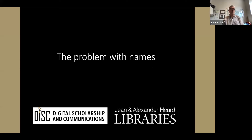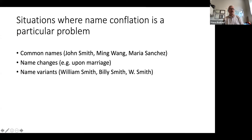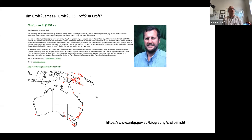First, the problem of disambiguation. If you have a very common name like John Smith or Maria Sanchez, there are going to be a lot of other people sharing that name, so it's hard to know which of those people are responsible for particular academic work. Other problems include people whose names change, people who don't always go by the same name, or people who use variants of their names like Bill, Billy, and William.